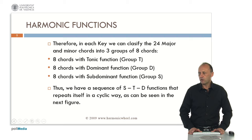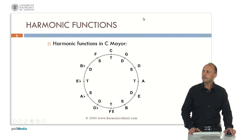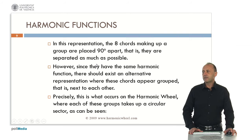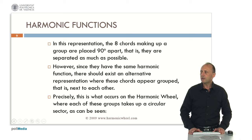If we represent this sequence — subdominant, tonic, dominant — on a cycle of fifths, we will find subdominant F, tonic C, dominant G, and then the same sequence S-T-D repeating around the cycle. In this representation on a cycle of fifths, the eight chords making up a group are placed 90 degrees apart, that is, they are separated as much as possible. However, since they have the same harmonic function, there should exist an alternative representation where these chords appear grouped, that is, next to each other.